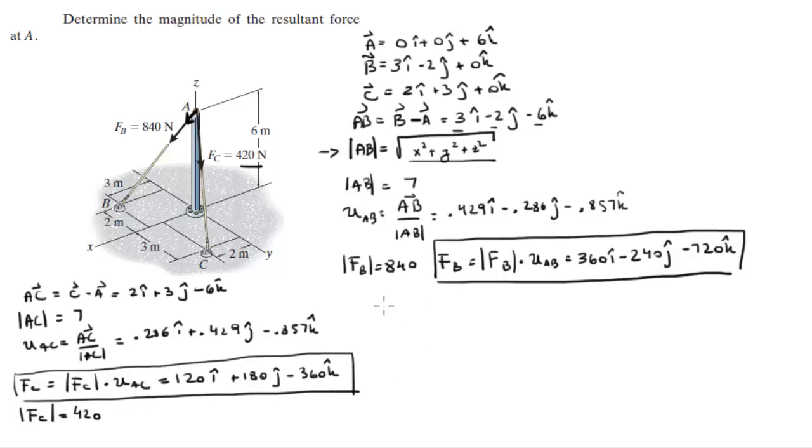With those two Cartesian vector forms of the forces FB and FC, you can find the resultant force, which is FC plus FB. So by adding the X with the X, the Y with the Y, and the Z with the Z,